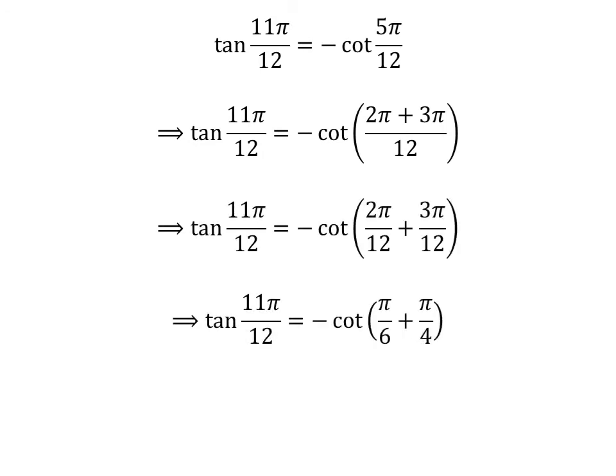Following the above steps, we get tangent of 11 times pi upon 12 is equal to minus cotangent of pi upon 6 plus pi upon 4.